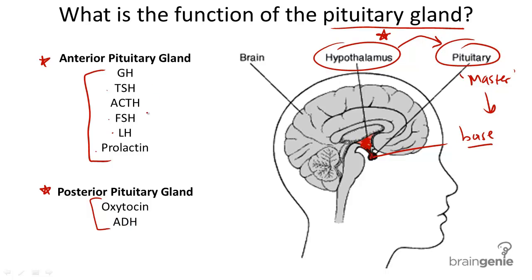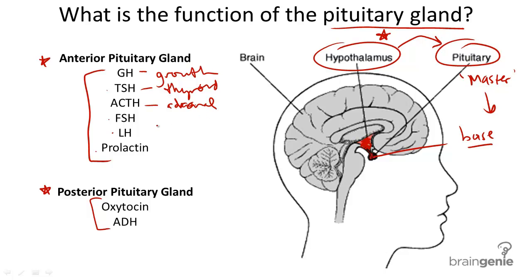The functions of these hormones vary. Growth hormone promotes bone growth, especially during childhood and adolescence. Thyroid stimulating hormone stimulates the thyroid to secrete thyroid hormones, regulating metabolism. Adrenocorticotropic hormone stimulates the adrenal cortex to secrete hormones.